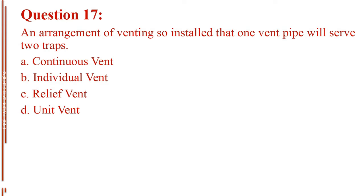Question number 17. An arrangement of venting so installed that one vent pipe will serve two traps. Letter A, continuous vent. Letter B, individual vent. Letter C, relief vent. Letter D, unit vent.